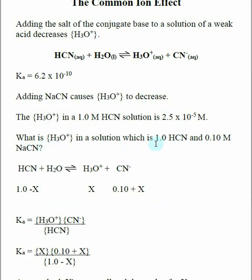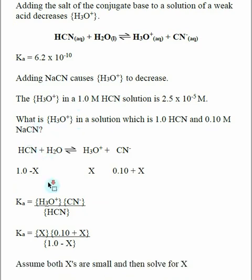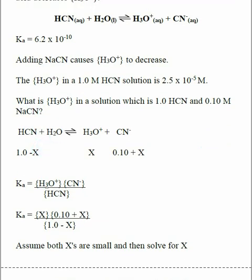We're sticking with the same amount of weak acid, 1.0 molar, and then we have a relatively small amount, 0.10 molar, of our conjugate base CN-. Looking at this equilibrium, we're starting with 1 molar HCN and 0.1 molar CN-.